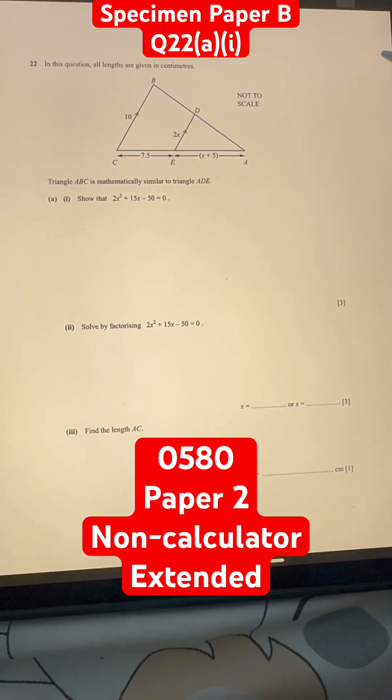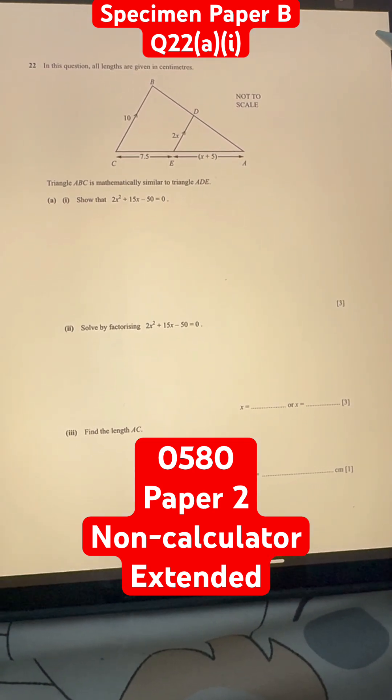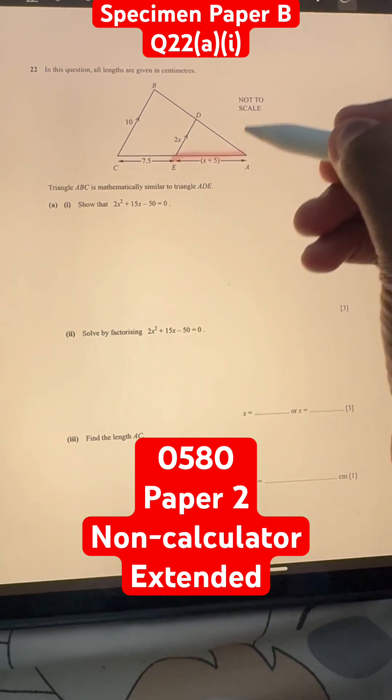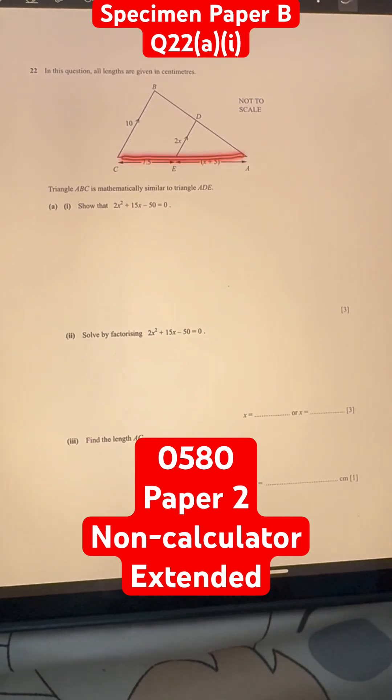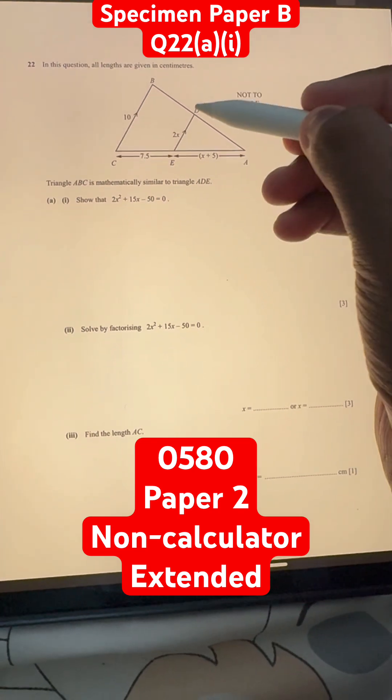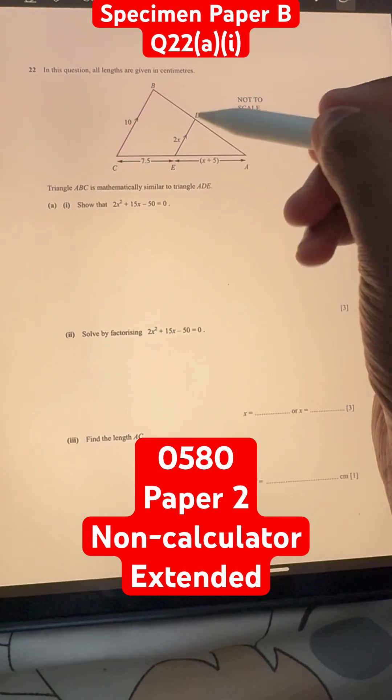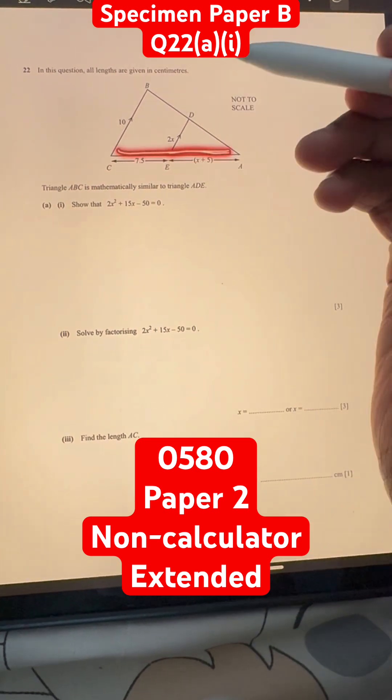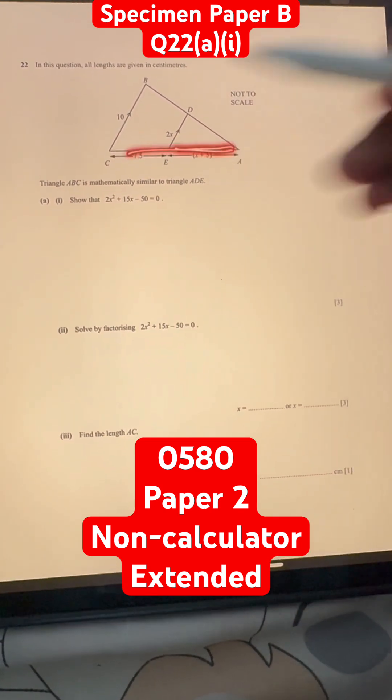How do we do that? We know that in similar triangles, the ratio of the sides is always equal. So, this side length divided by the big one here, AC. AE divided by AC is the same as ED divided by BC, because these are the corresponding sides on both similar triangles, and this is smaller divided by larger side.